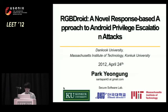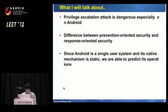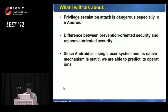Today I'd like to present RGB Droids that utilize response-based security mechanisms to handle privilege escalation attacks on Android. I will focus on three main points: first, the seriousness of privilege escalation attacks on Android; second, the difference between prevention-based and response-based security; third, that the native-level mechanism of Android is static. RGB Droid adopts response-based security using this static characteristic, and its effectiveness will be presented.